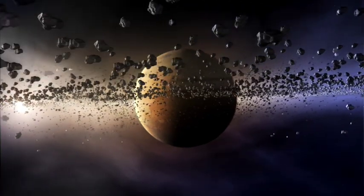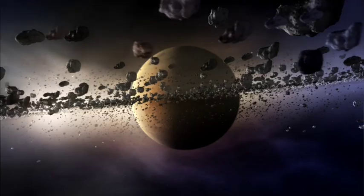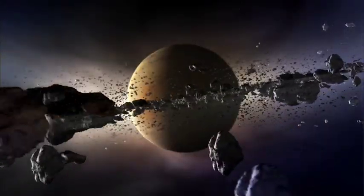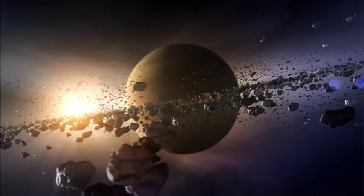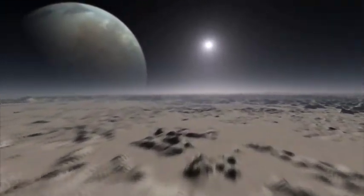And the observations show that Fomalhaut B is much brighter than expected for an object of its size. It could have an enormous ring system, much larger than Saturn's, reflecting starlight in all directions. One day the material in these rings may even coalesce to form moons.